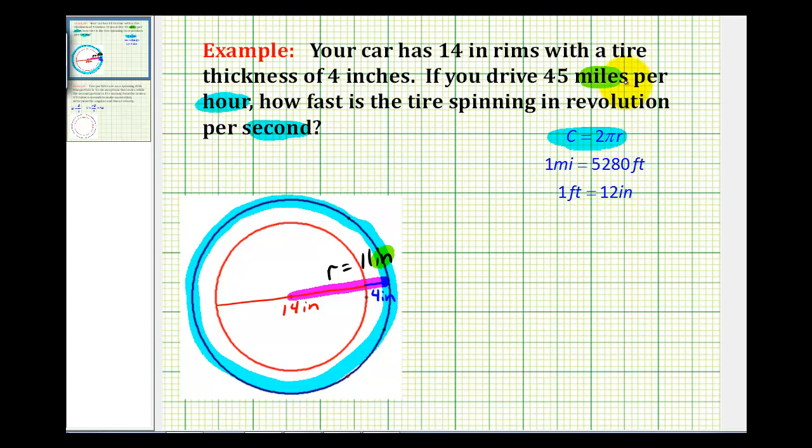Let's first convert 45 miles per hour into inches per second. So 45 miles per one hour. We're going to multiply this by several unit fractions to do the conversions. Let's first convert miles into inches. And since we want miles to simplify out, we're going to put one mile in the denominator, and 5,280 feet in the numerator.